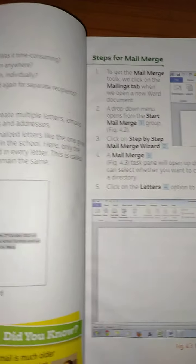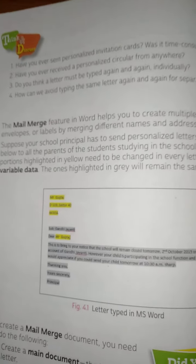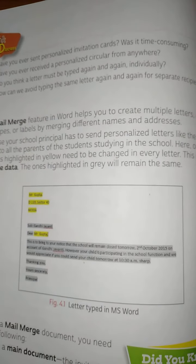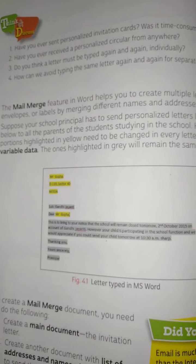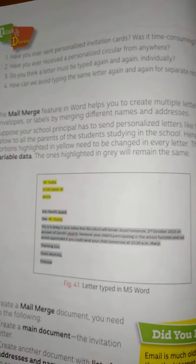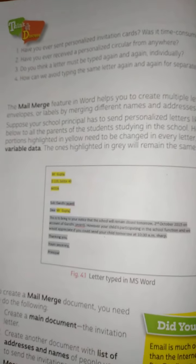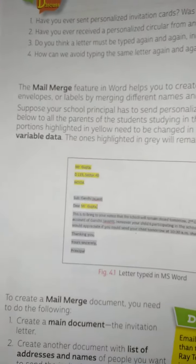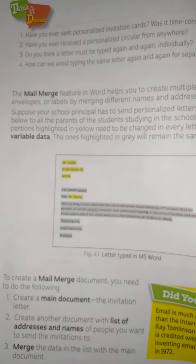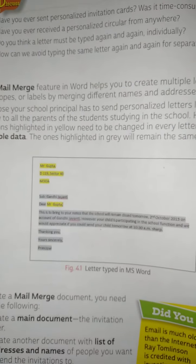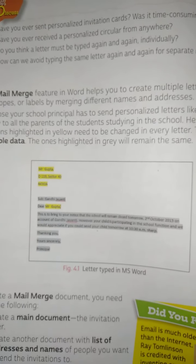The mail merge feature in Word helps you to create multiple letters. When the matter is the same for many letters, we use the mail merge option found in Word. The data that changes — like name and address — is called variable data. The grey highlighted portions remain the same, and the yellow highlighted portions will be changed.